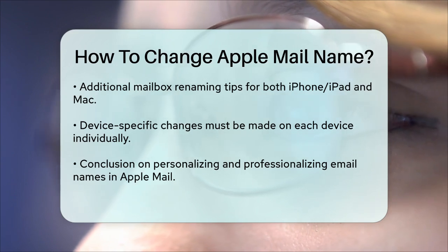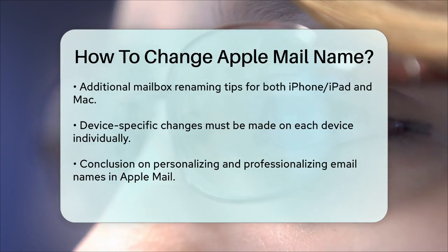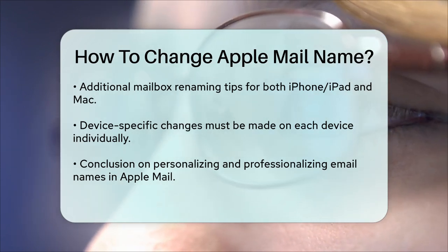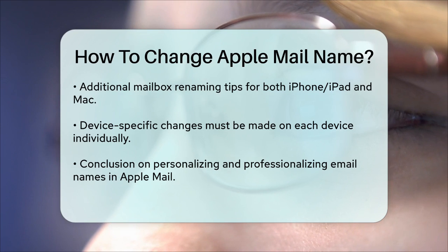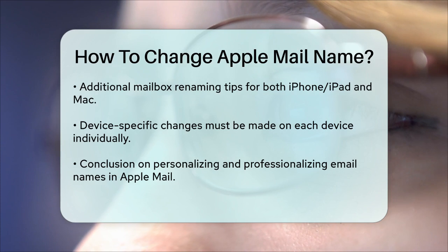On Mac, open the Mail app, go to Preferences, select the email account, and enter the desired name in the Description field. Remember, these changes are device-specific, so you'll need to make them on each device separately. By following these steps, you can easily change the name that appears on your emails sent through Apple Mail, making it more personalized and professional.